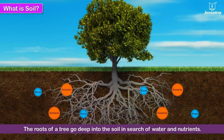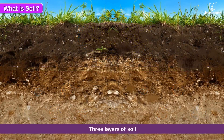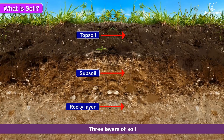The roots of a tree go deep into the soil in search of water and nutrients. If you observe a freshly cut section of the soil, you will see the three layers of soil quite clearly: topsoil, subsoil, and rocky layer.